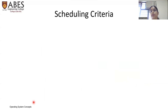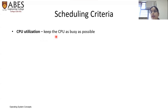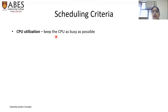The next topic is scheduling criteria — what are the important criteria on the basis of which the CPU schedules processes in the ready queue. The first criteria is CPU utilization, which means keeping the CPU as busy as possible. If we have 8 GB of RAM, we try to execute as many processes as possible until the system is fully utilized. The number of processes we can schedule depends on CPU utilization, and we want to get the CPU 100% utilized.